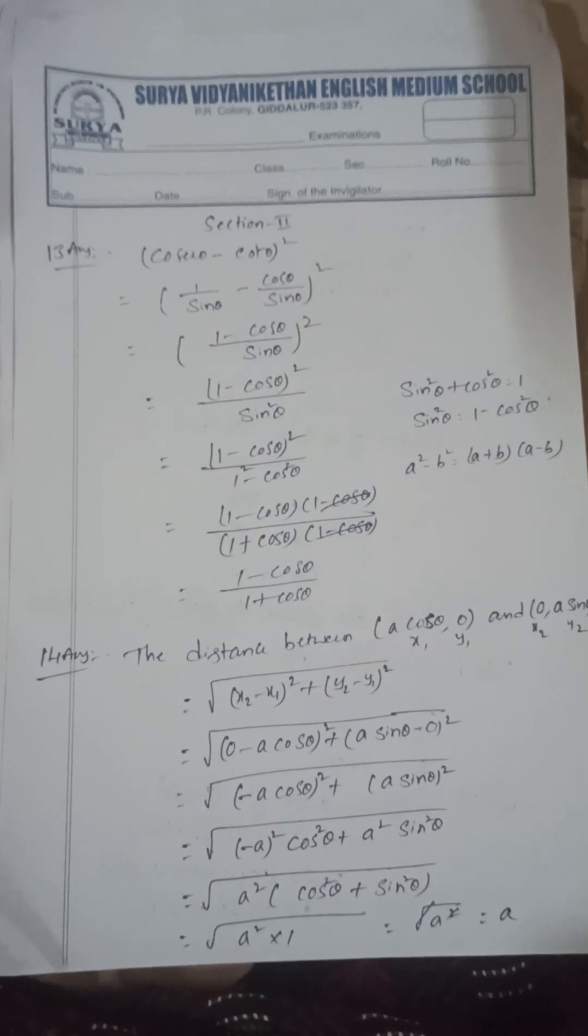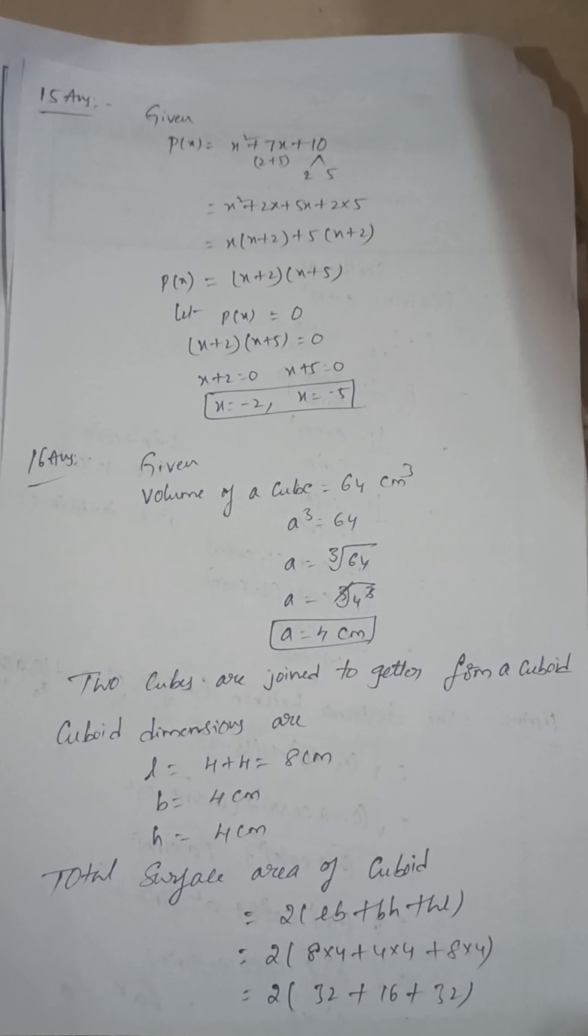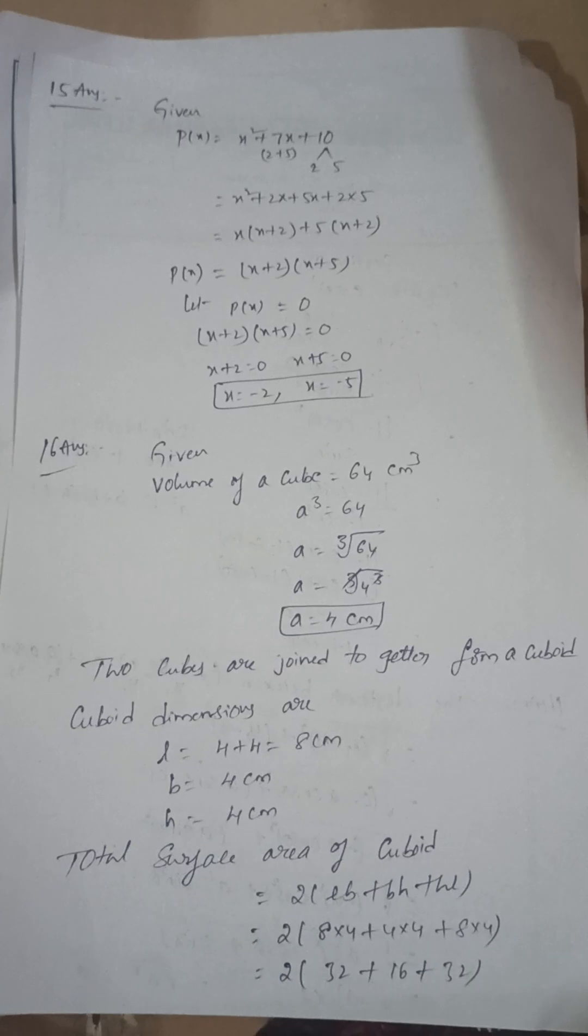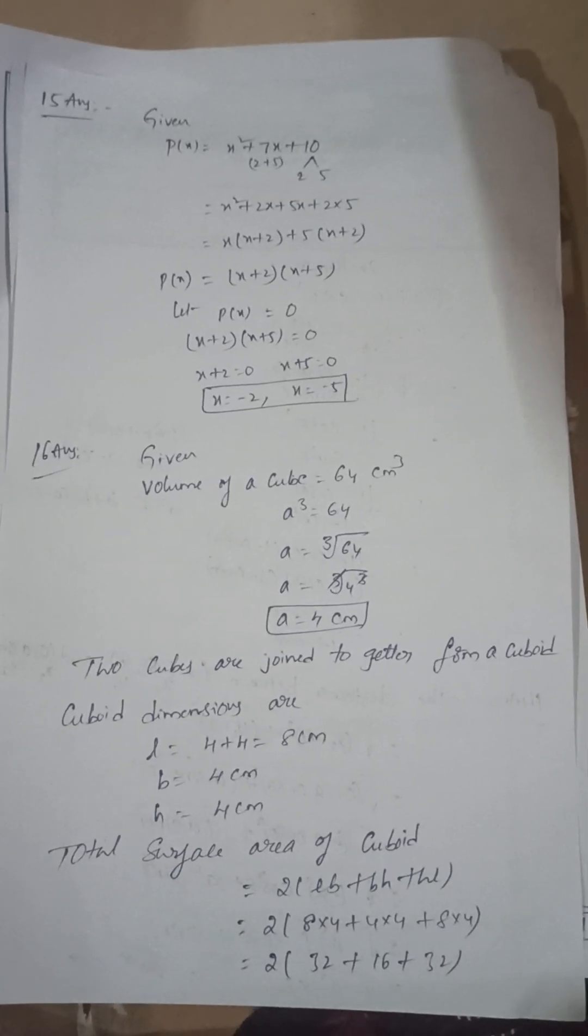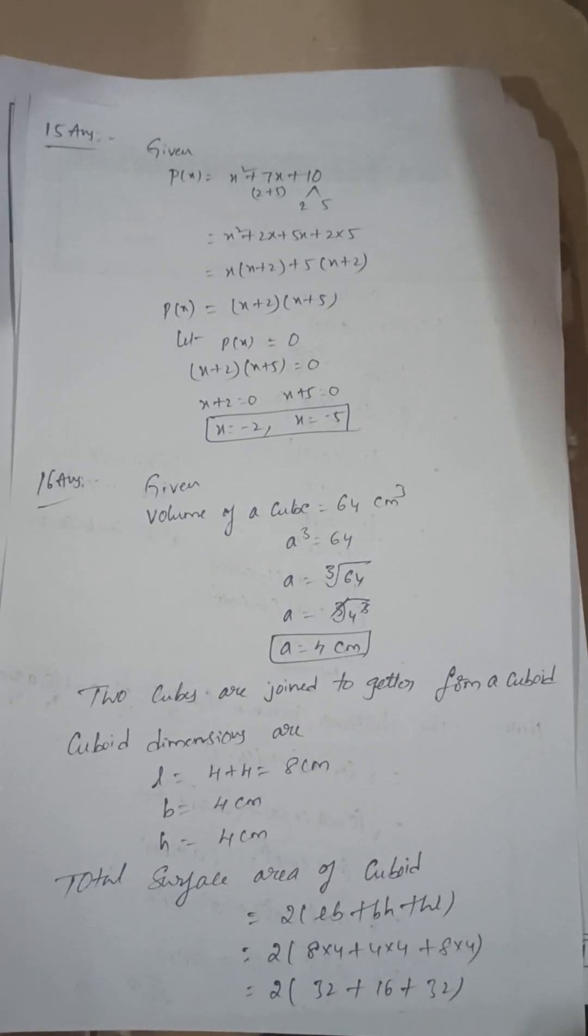So here we can use the distance formula square root of x2 minus x1 whole square plus y2 minus y1 whole square, and also you can use the trigonometric identities. Next, find the zeros of the quadratic polynomial x square plus 7x plus 10. So by using splitting method, x is equal to minus 2, x is equal to minus 5.